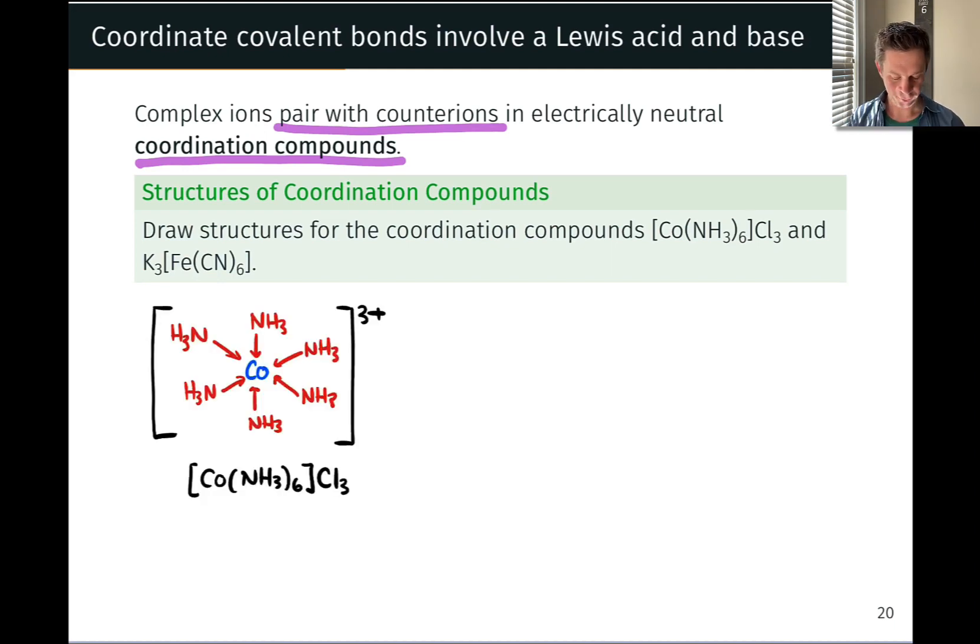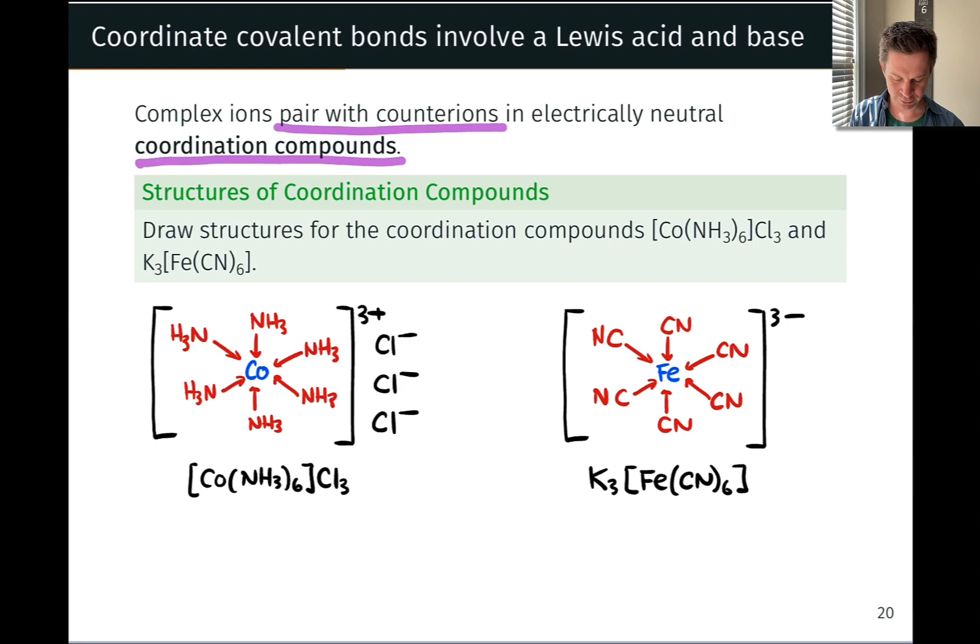Let's start with the cobalt complex. That had a net charge of 3+, and we've got 3 chlorines here to counterbalance that charge. So the 3+ charge on the cationic complex ion is counterbalanced by 3 anionic chlorides, which are not coordinated to the cobalt. This is a distinction that we're going to return to shortly that is actually very important. These chlorides are in a distinct space from the ammonia ligands, the NH3 ligands. The chlorides are not ligands, is the main thing to keep in mind for the time being.